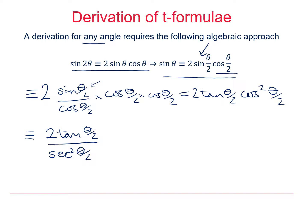Then I can use a sec squared identity. So I'll keep the numerator the same: 2 tan(θ/2), but sec² is 1 plus tan² and my angle is θ/2.